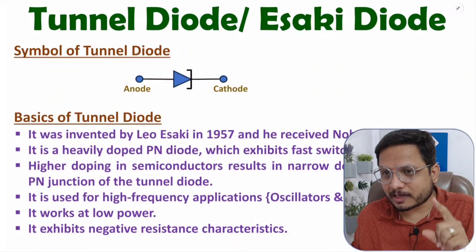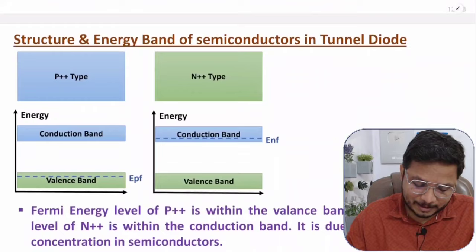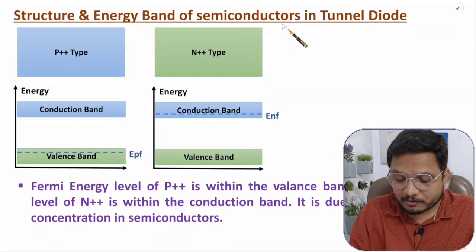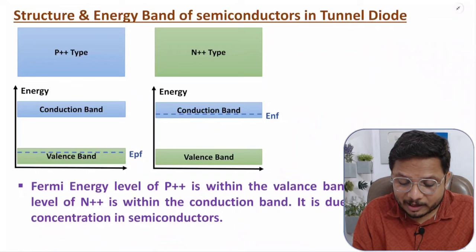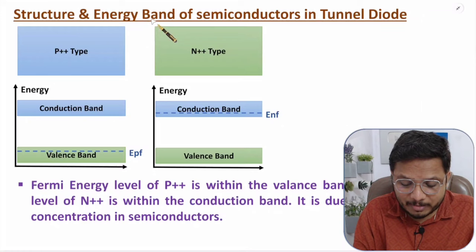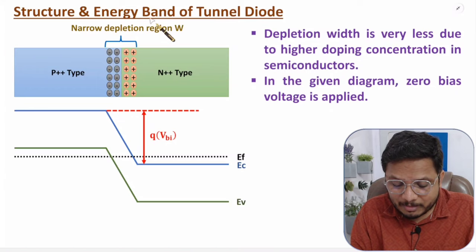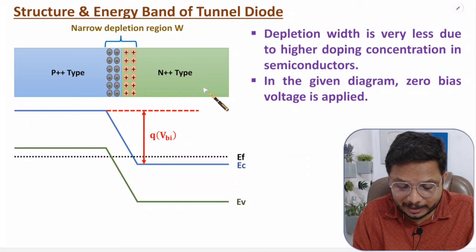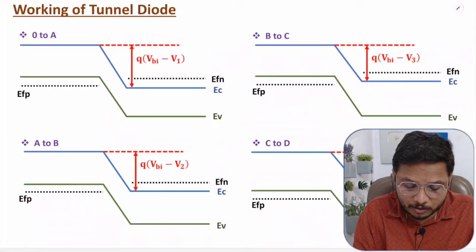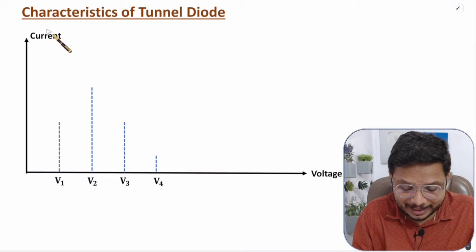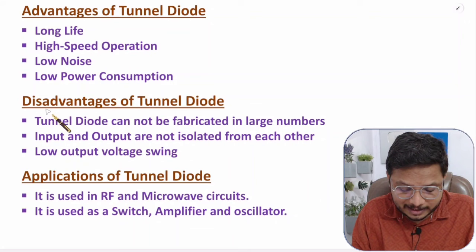Before I start, let me show you what I am going to cover in this video. First I will explain the basics of tunnel diode. After that I will explain the structure and energy band diagram of the semiconductors used in tunnel diode, which use higher doping concentration with P type and N type material. Then I will explain the structure and energy band diagram of tunnel diode with the PN junction. After that I will explain the working of tunnel diode and how we can derive its characteristics. And at last I will discuss advantages, disadvantages, and applications of tunnel diode.